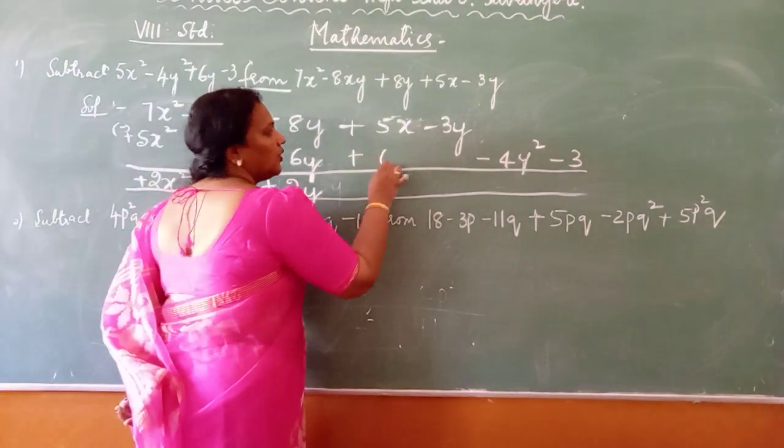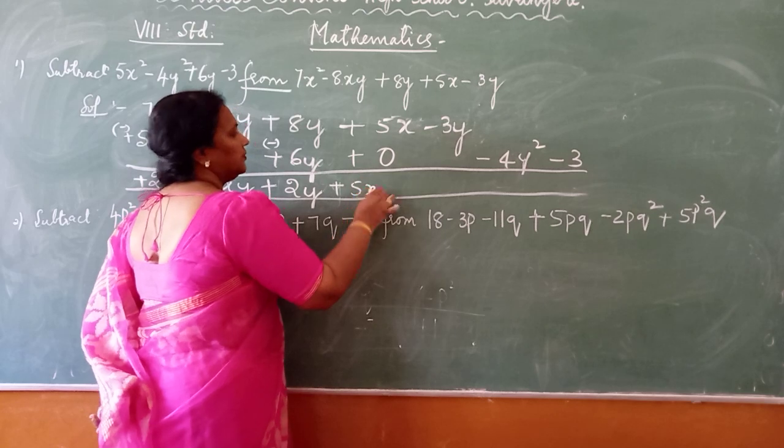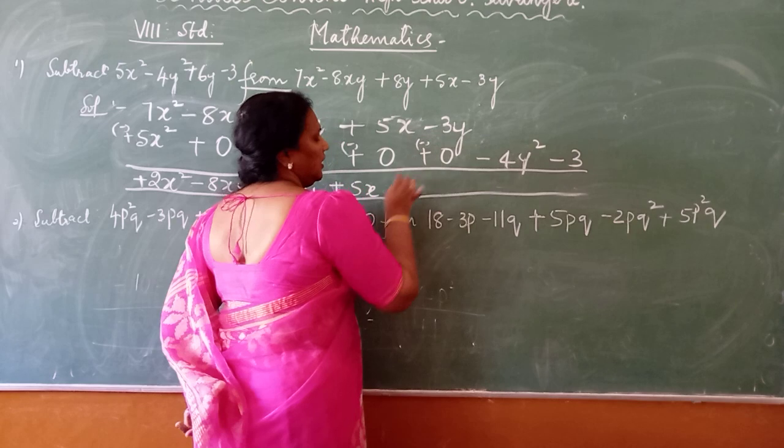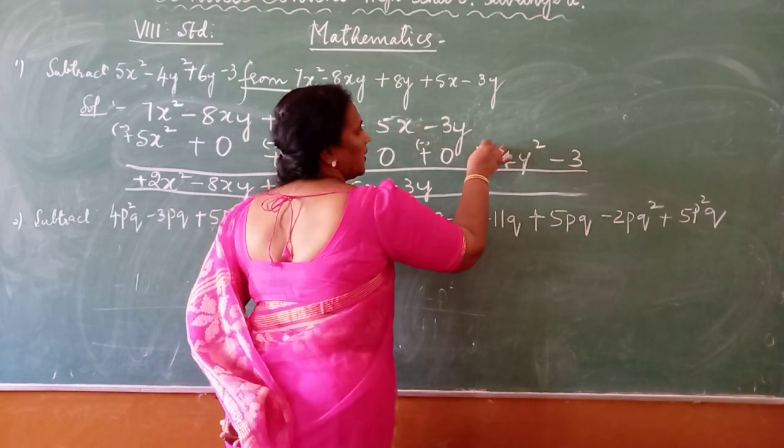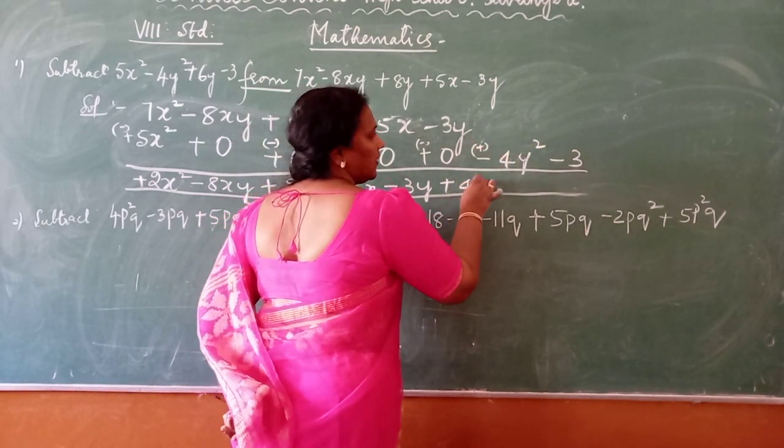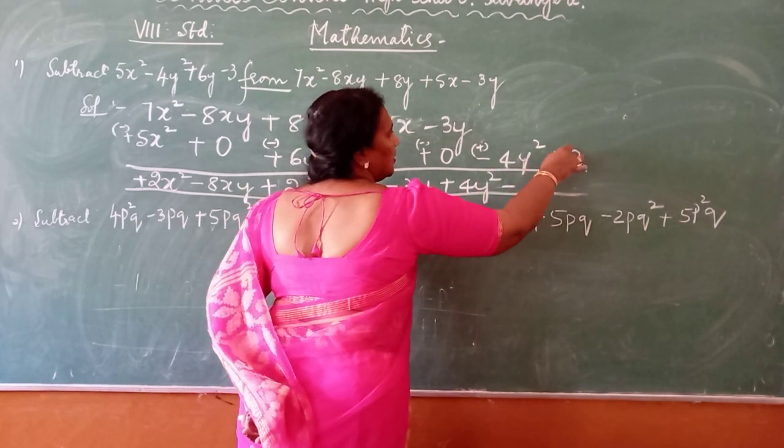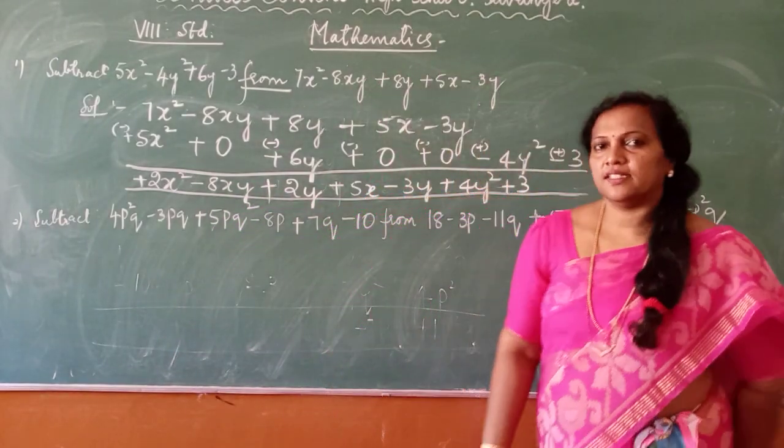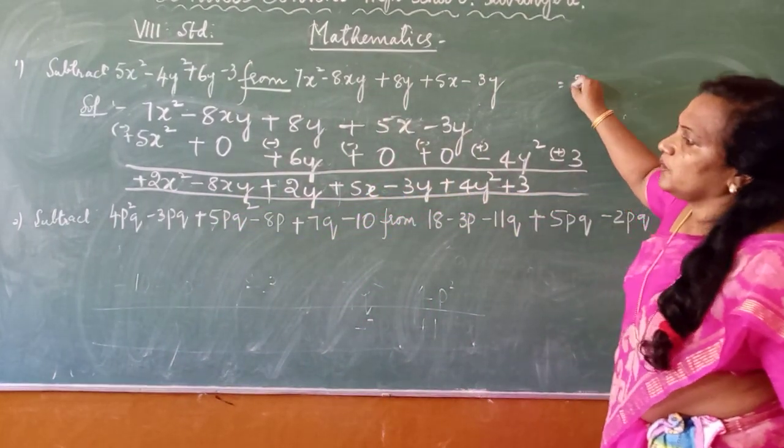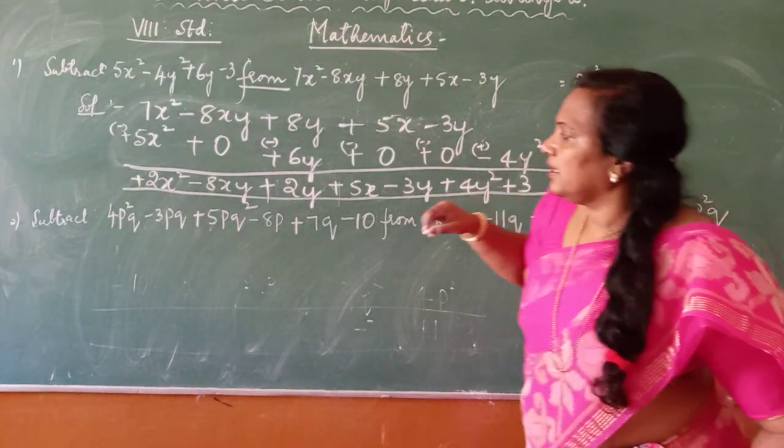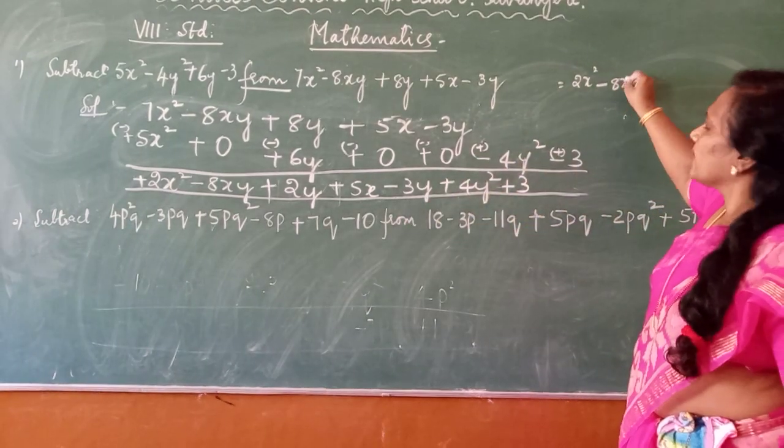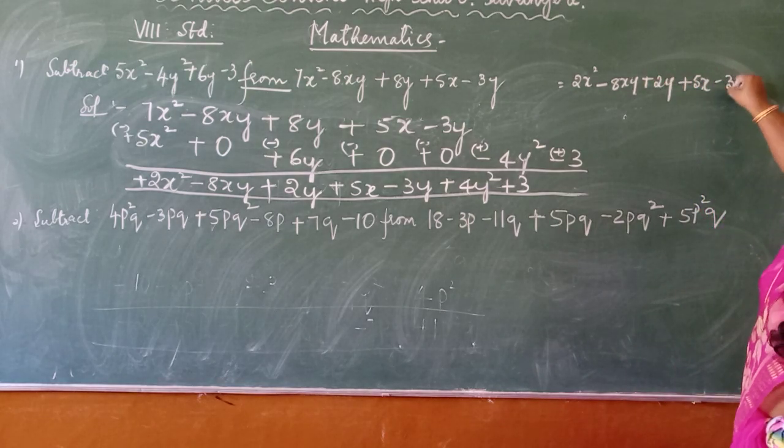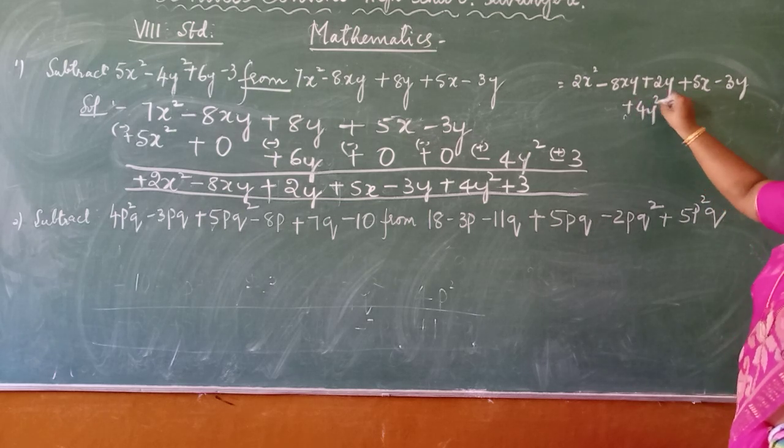There is nothing, understood what you have to put? 0. Plus 5x's. Then, there is nothing, understood what you have to put? 0. It is minus 8. Plus 4y's part. So it is plus. Finally, you are supposed to write the answer. 2x's part minus 8xy plus 2y plus 5x minus 3y plus 4y's part plus 3.